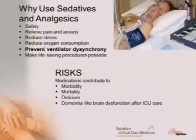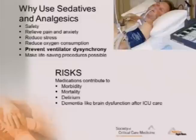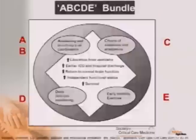Why are we using sedation and analgesia? For safety, to relieve pain and anxiety, reduce stress, reduce oxygen consumption, prevent ventilator dyssynchrony, and make life-saving procedures possible. But there are risks — risks to medications, morbidity, mortality, delirium, and dementia-like brain dysfunction after ICU care.